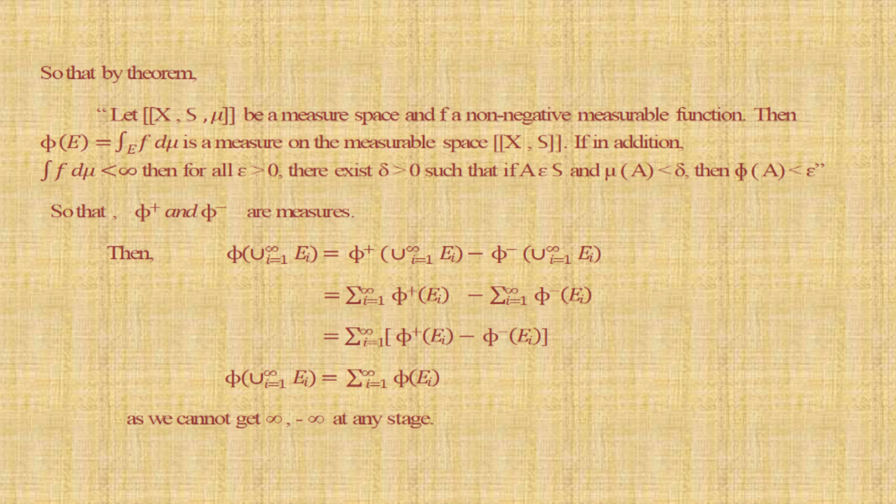Now we will calculate φ(∪_{i=1}^{∞} E_i) = φ⁺(∪_{i=1}^{∞} E_i) − φ⁻(∪_{i=1}^{∞} E_i). By countable additivity this becomes Σ_{i=1}^{∞} φ⁺(E_i) − Σ_{i=1}^{∞} φ⁻(E_i) = Σ_{i=1}^{∞} [φ⁺(E_i) − φ⁻(E_i)] = Σ_{i=1}^{∞} φ(E_i). So the third property is also satisfied. All three conditions are satisfied, so the given function φ is a signed measure.